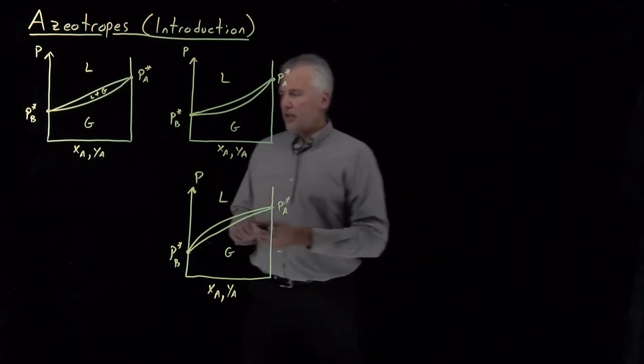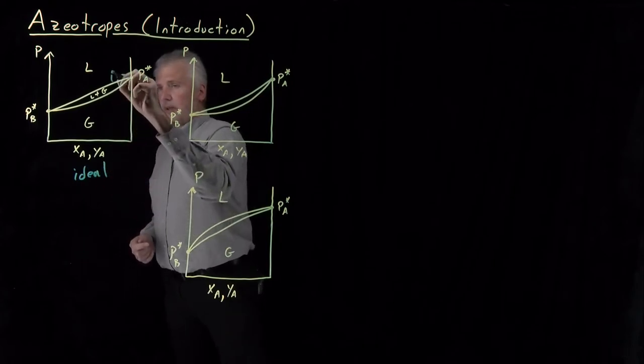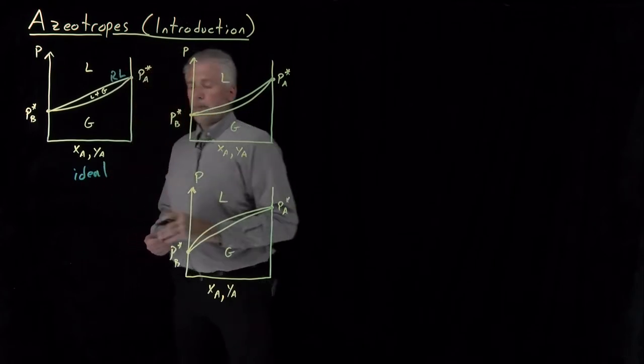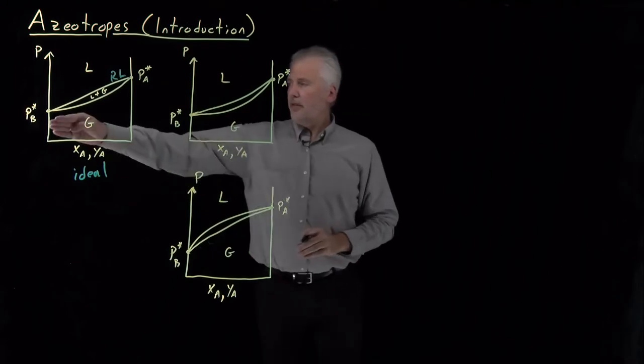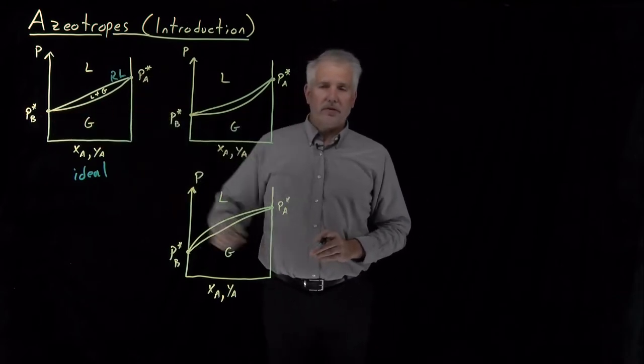First of all, here's the Raoult's law curve. So this is Raoult's law, the bubble point line for an ideal solution, straight line connecting the vapor pressures of the two solvents of this binary solution.